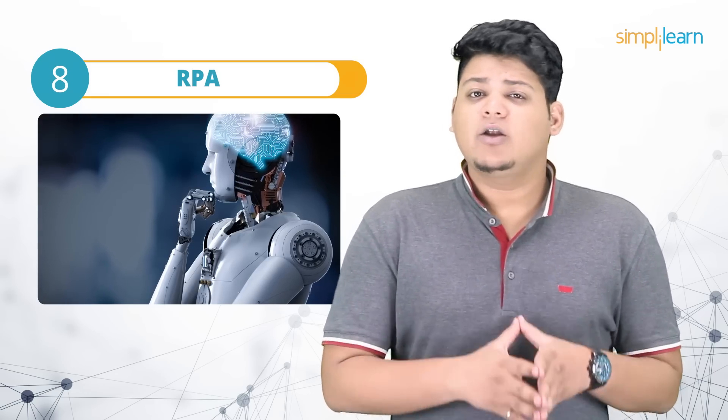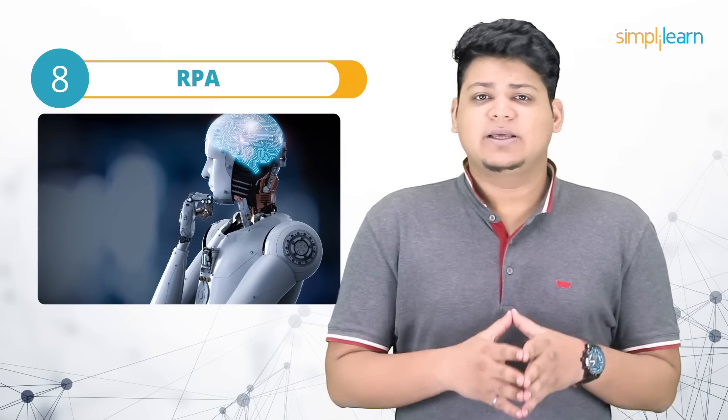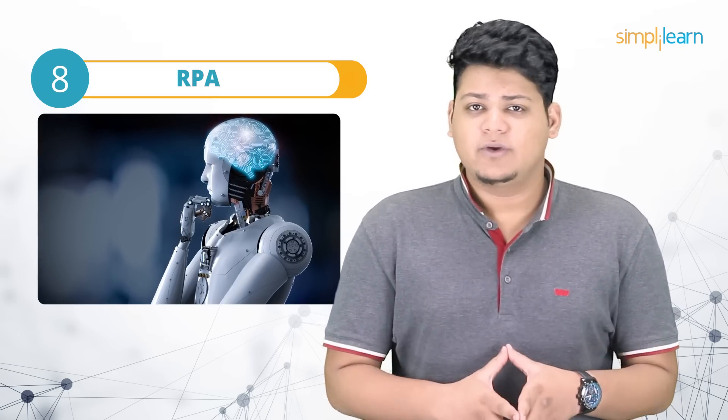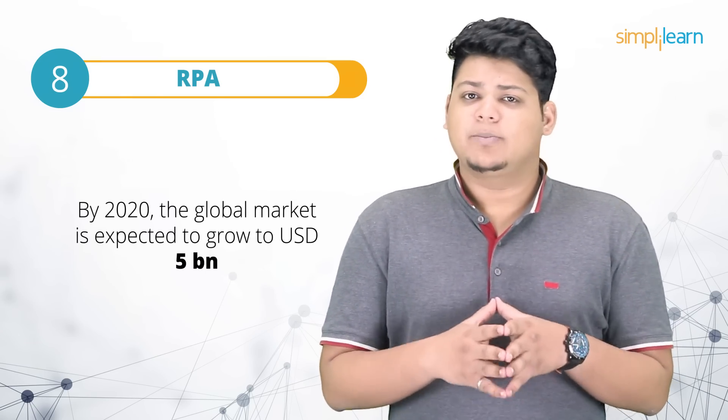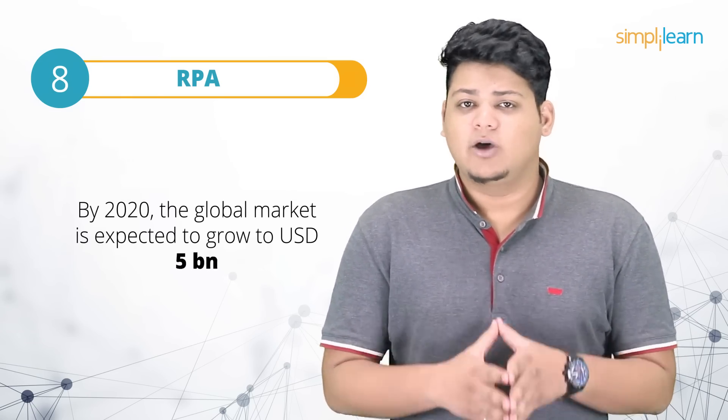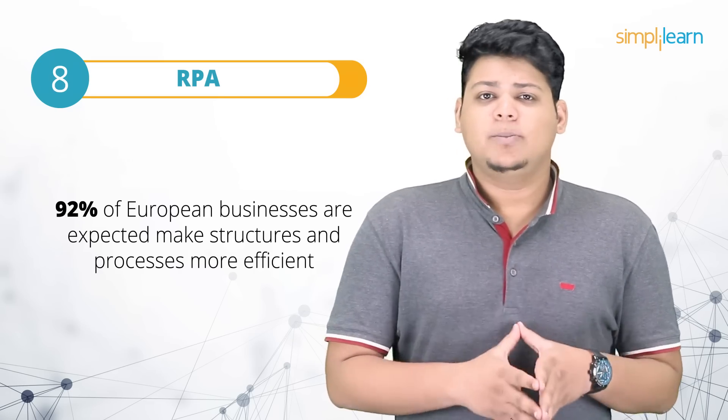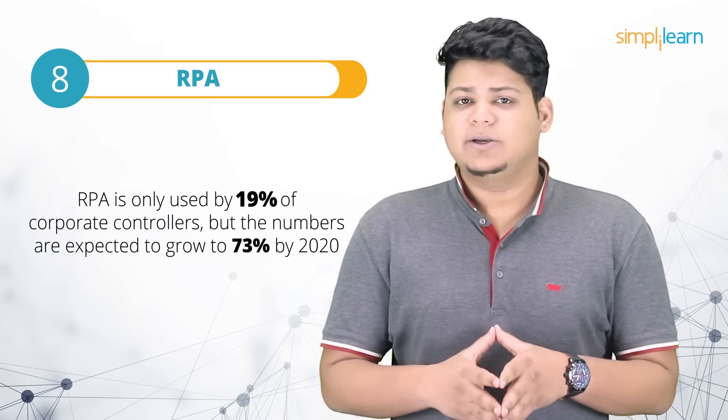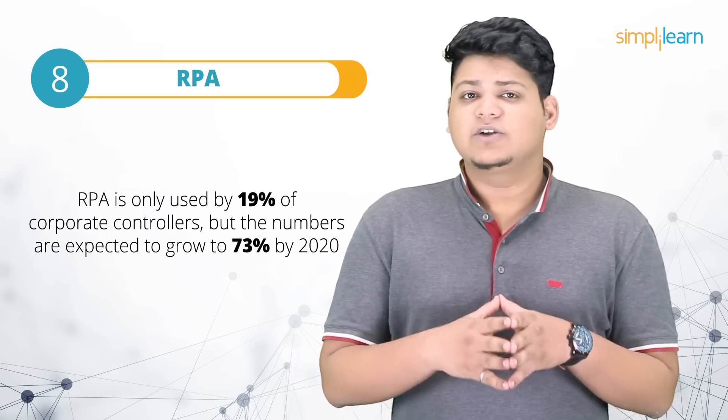Robotic process automation is an evolving technology that is expected to be mainstream in 2020. It is estimated that by 2020, 40% of large enterprises will have deployed RPA software, up from less than 10% today. By 2020, the global market for RPA technologies is expected to grow to $5 billion. By 2020, 92% of European businesses will be adopting robotic process automation technologies to make structures and processes more efficient. RPA is used by just 19% of corporate controllers, but that number is set to grow by 73% of controllers by 2020.